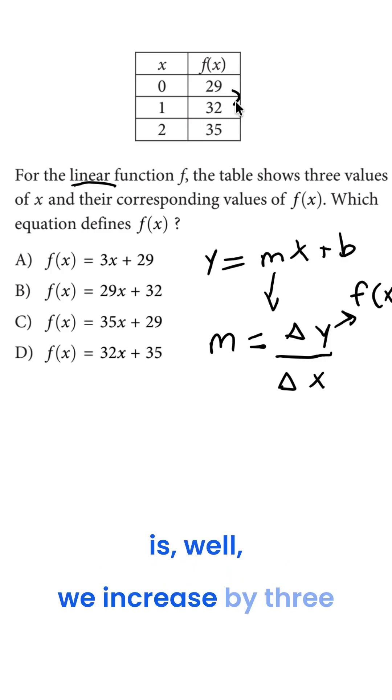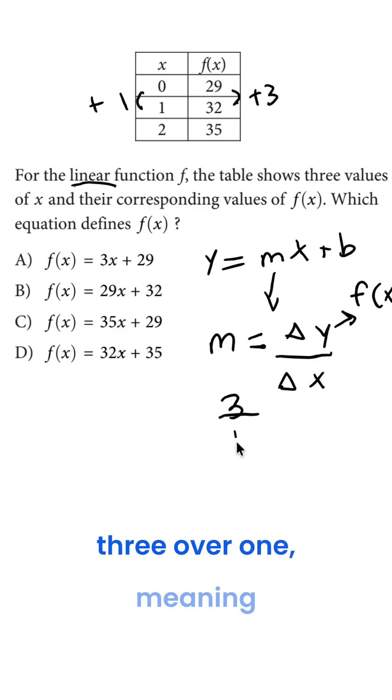We increase by 3 for every 1 we increase. So our delta y would be 3 over 1, meaning our slope is 3.